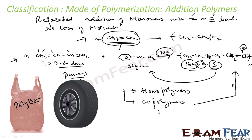Homopolymerization is nothing but the polymerization of a single monomer to form a polymer - polyethene is an example. Co-polymers are nothing but polymers made by addition polymerization of two different monomers. Both are addition polymerization reactions and both are addition polymers, because both are formed by addition reaction. These addition polymers are further classified as homopolymers or co-polymers.